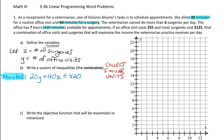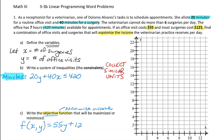The next unit I notice is dollars. We have $55 per office visit and $125 per surgery. That's what we're trying to maximize — the income. So that information goes into our objective function. Our objective is to maximize income. The function is f(x, y) equals 55y — since office visits are y — plus 125x — since surgeries are x. You can also write it as 125x plus 55y; that works too.